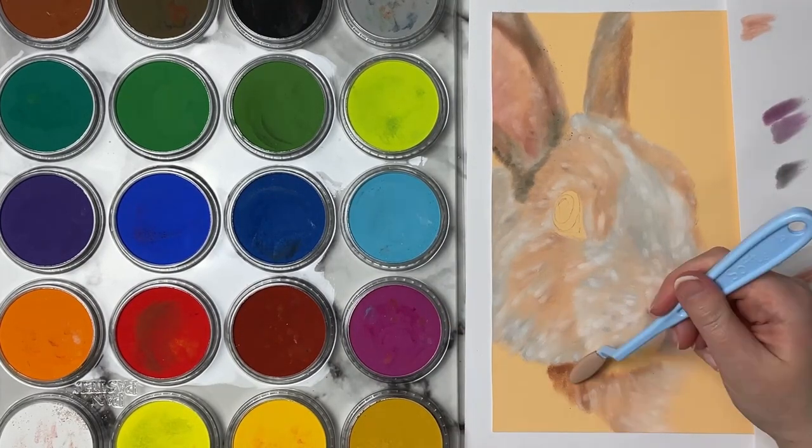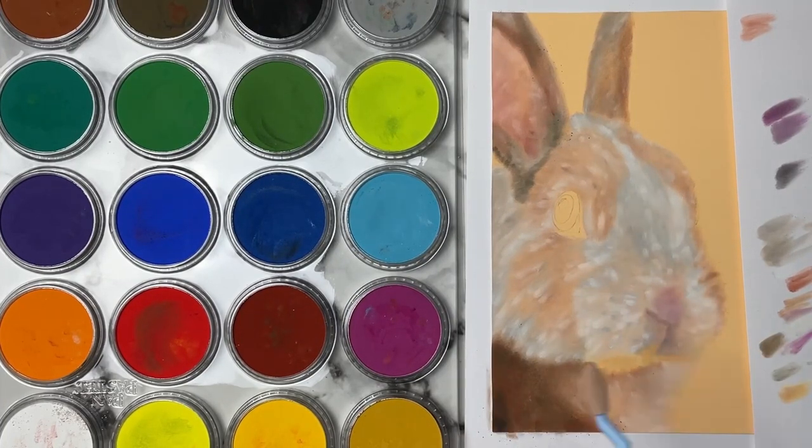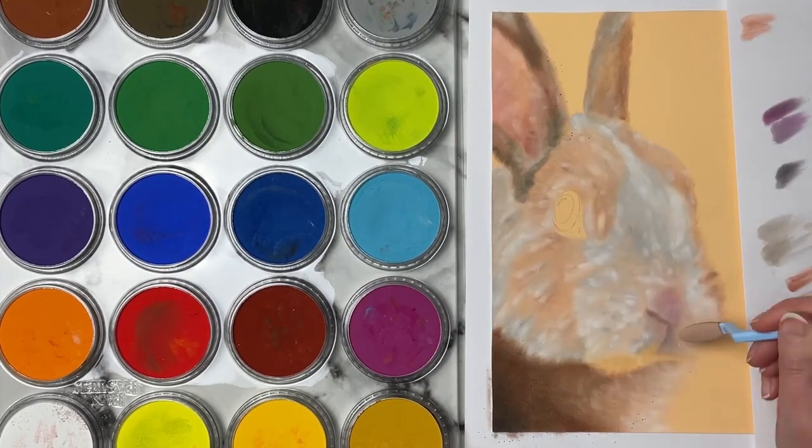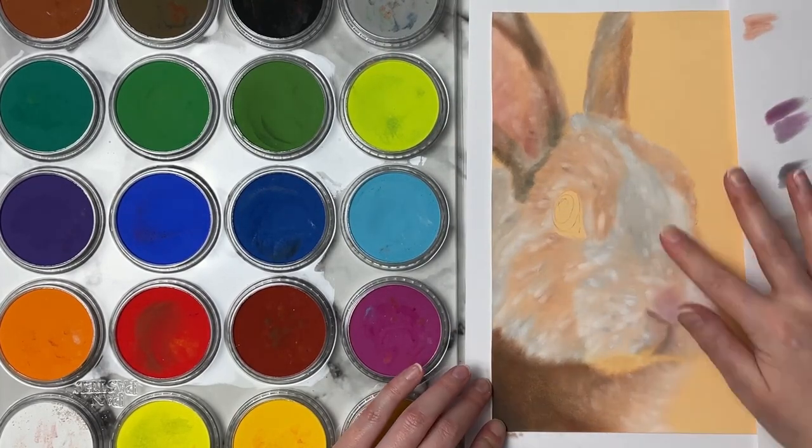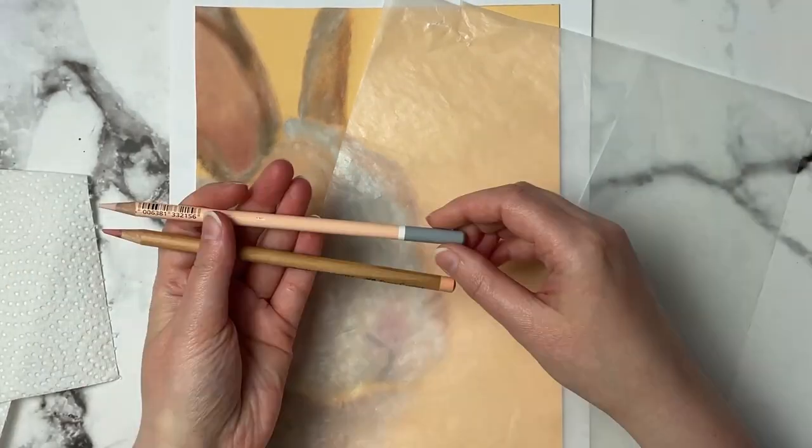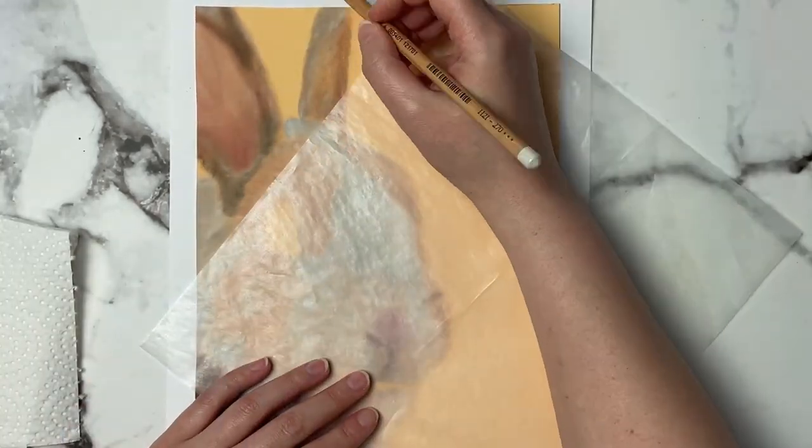Now as you can see my base layer with the pan pastels is looking kind of blotchy. It's looking like a hot mess and that's totally fine because we're going to cover this up with our pastel pencils anyway. This is just giving us that first layer, like if you were using colored pencils and you put down that base layer so that your details will show up over top. This is sort of the same concept here.